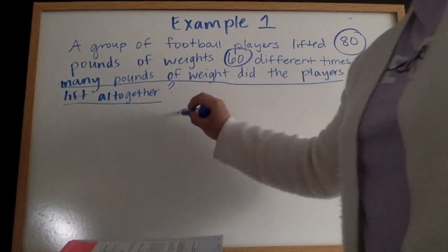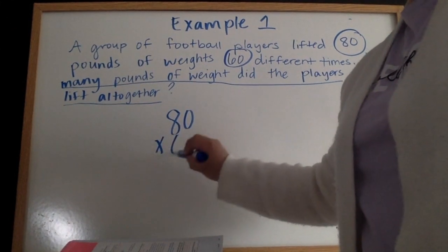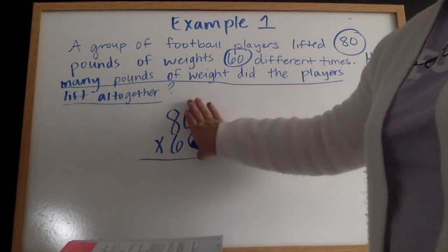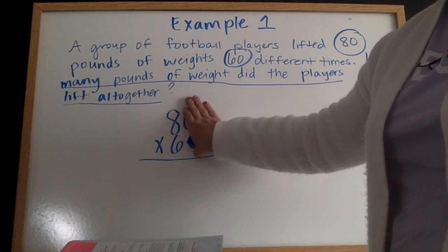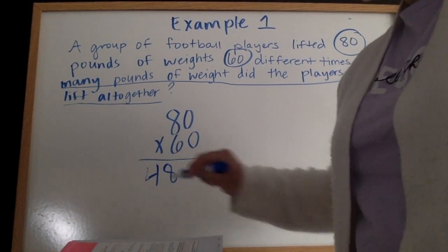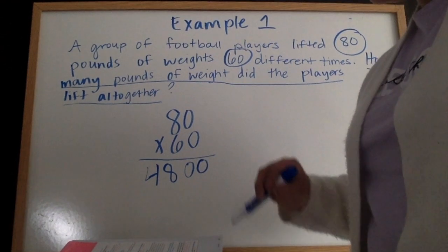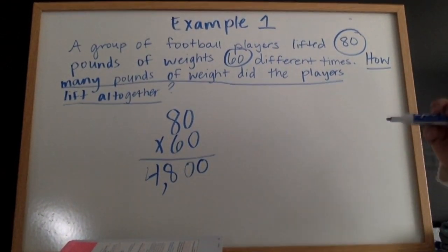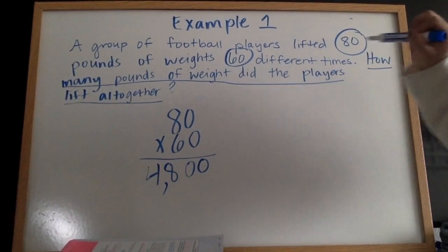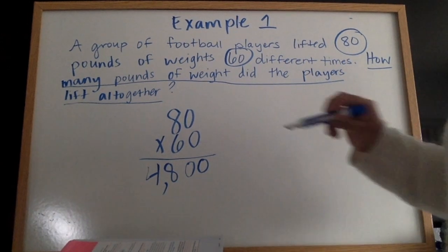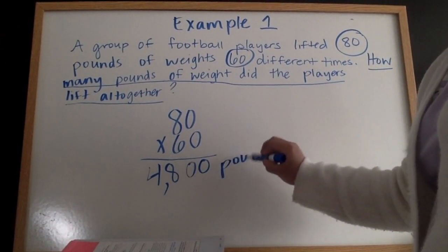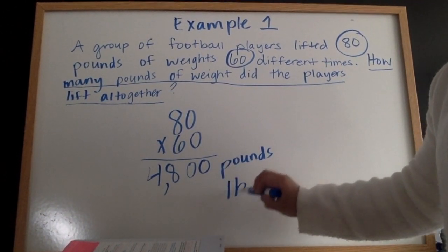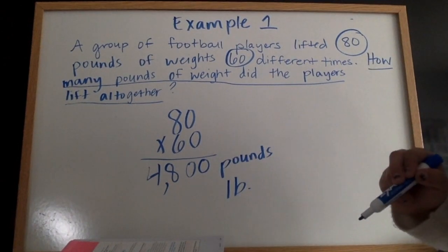So, all together, 80 times 60, we can cover up these two zeros, right? Pretend they're not there. Then we have 8 times 6, which is 48. Put those two zeros down in our product, and we are left with 4,800. We do need a label because it's a word problem. Going back to the question, it asks us how many pounds of weight did they lift together. So it's 4,800 pounds. You can write it out all the way like that, or you can just write LB because LB is the abbreviation for pounds.